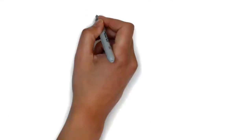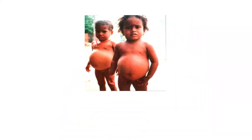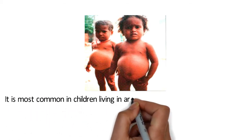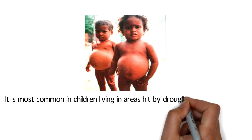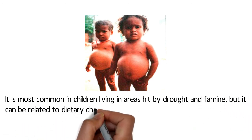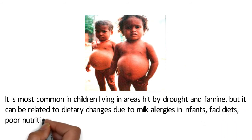Kwashiorkor is caused by a diet low in protein. It can also arise due to infections, parasites, or other conditions that interfere with protein absorption from the gastrointestinal tract. It is most common in children living in areas hit by drought and famine, but it can be related to dietary changes due to milk allergies in infants, fad diets, poor nutritional education, or a chaotic home life.